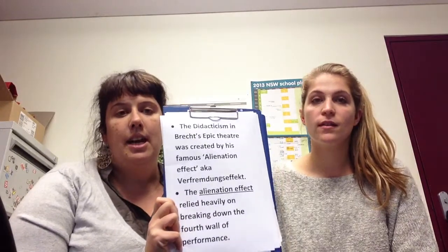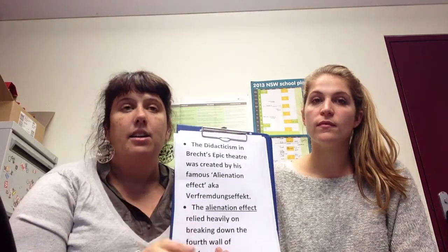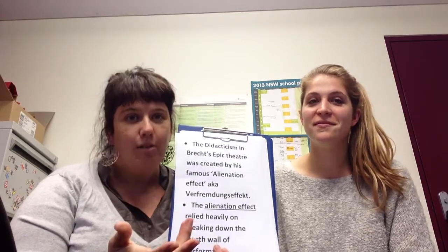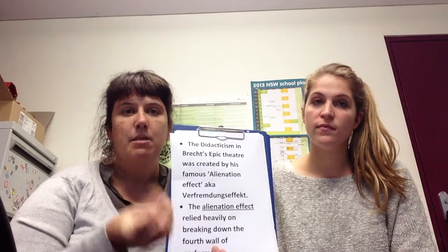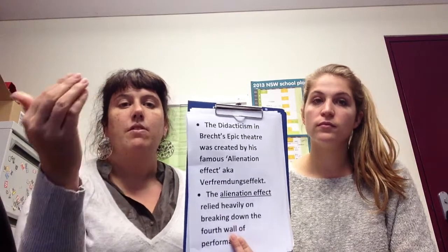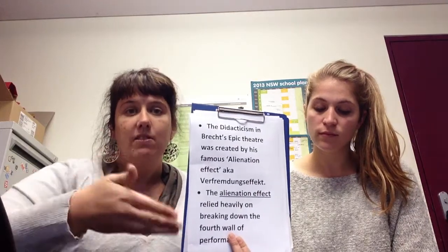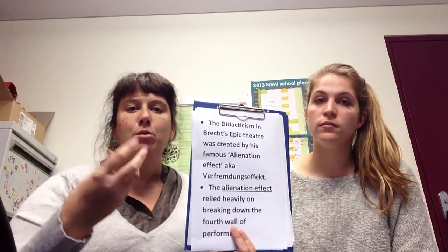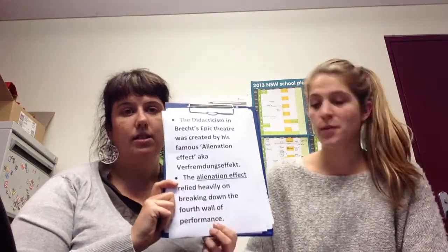The didacticism in Brecht's epic theatre was created by a uniquely Brechtian technique called the Verfremdungseffekt — otherwise known as the alienation effect or technique. This was purely Brecht's creation. The idea being that he wanted his audience to feel alienated from what was going on on stage. He wanted them to be shocked out of their passive observance and to be confronted by what was happening, and not be able to have emotional ties with what was going on on stage.